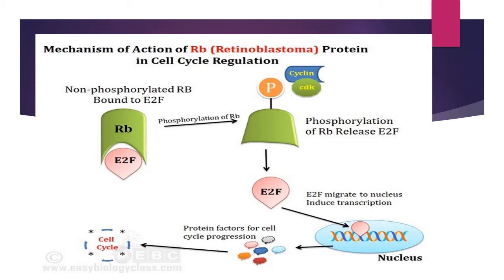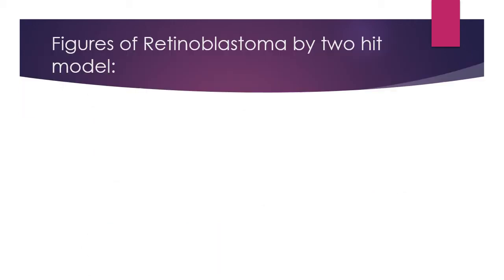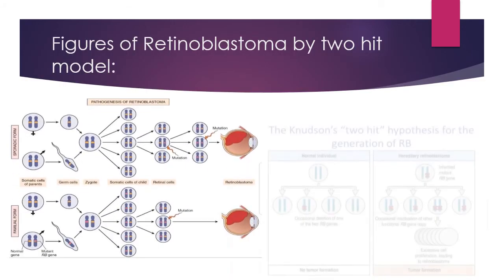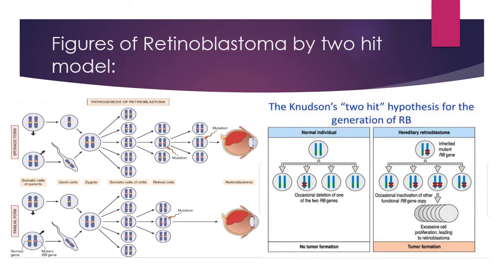If Rb is phosphorylated, E2F forms more and more transcription, and affected E2F can be able to form cancer. There are two models describing retinoblastoma — the sporadic form and the familial form.